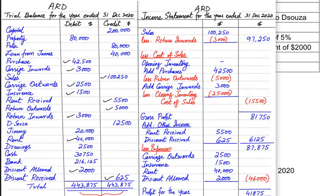We deduct total expenses from the subtotal figure to calculate the final profit — profit for the year, previously known as net profit. This is basically an income statement, which calculates how much profit was earned during the year and what was the main benefit of conducting the business that year.